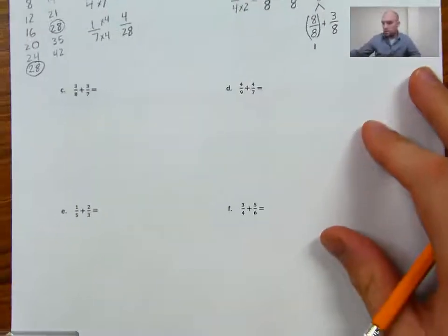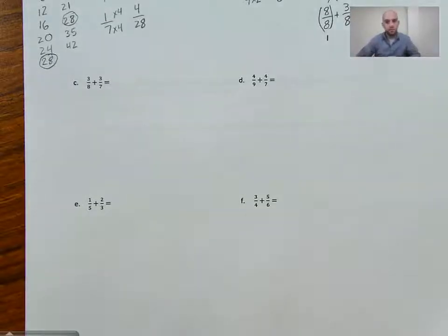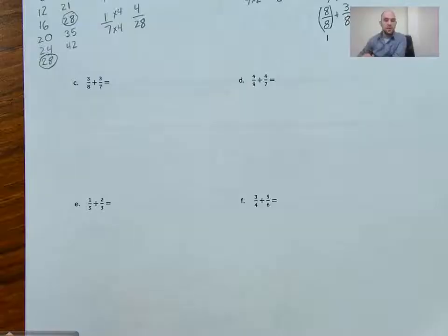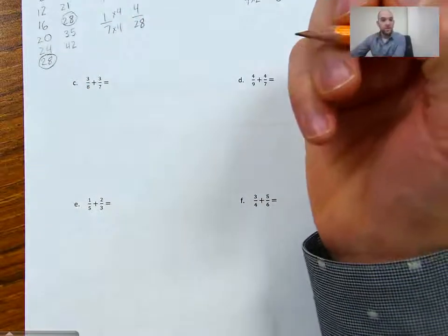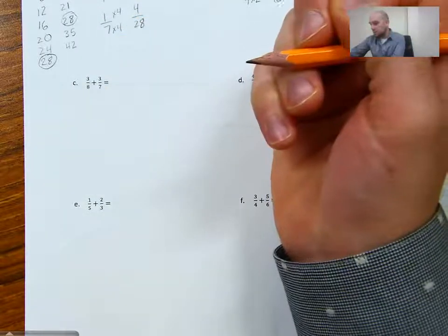Alright, let's move on to letter C. We have 3/8 plus 3/7. Now I'll show you guys another way you can do this. If you're like, hey, you know what? I don't want to make a number tree for this one. I can just multiply these two together, and I know I'll find a common denominator. It may not be my lowest, but it's always a safe bet. And we can always simplify the fraction afterward. So this time I'm just going to do 8 times 7, which is 56.